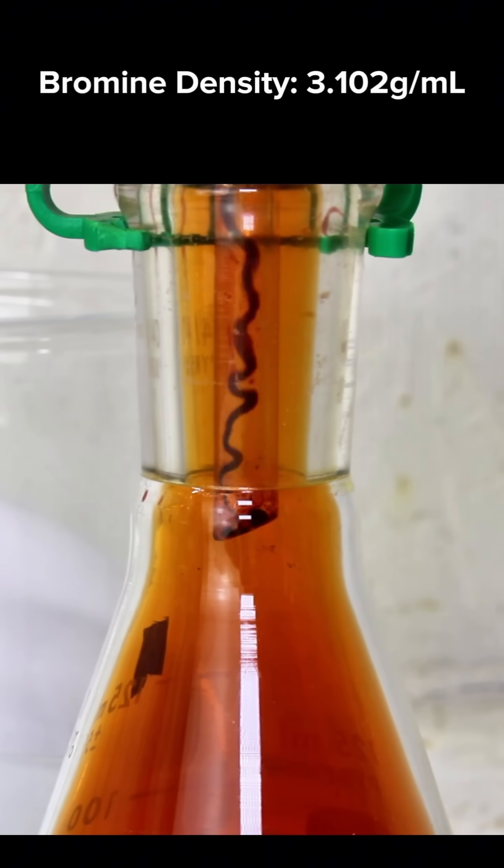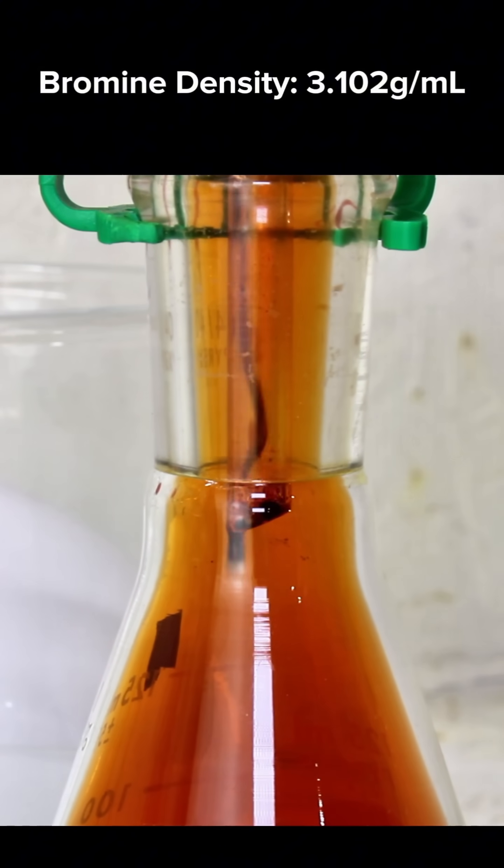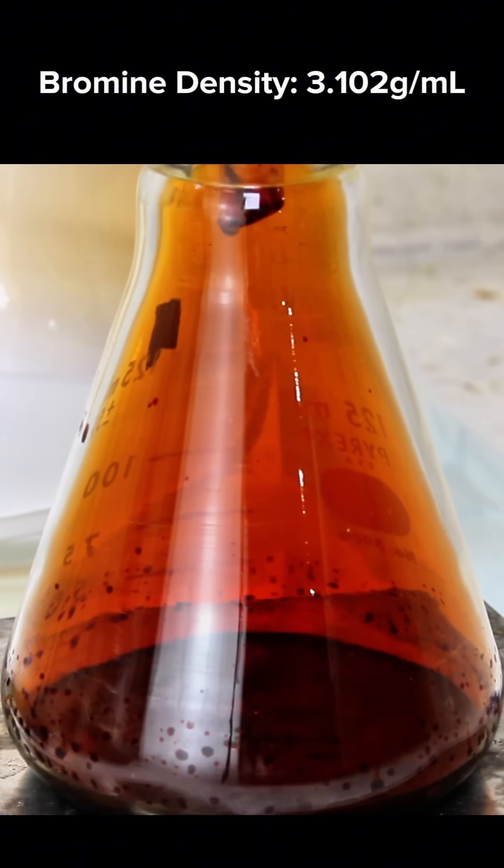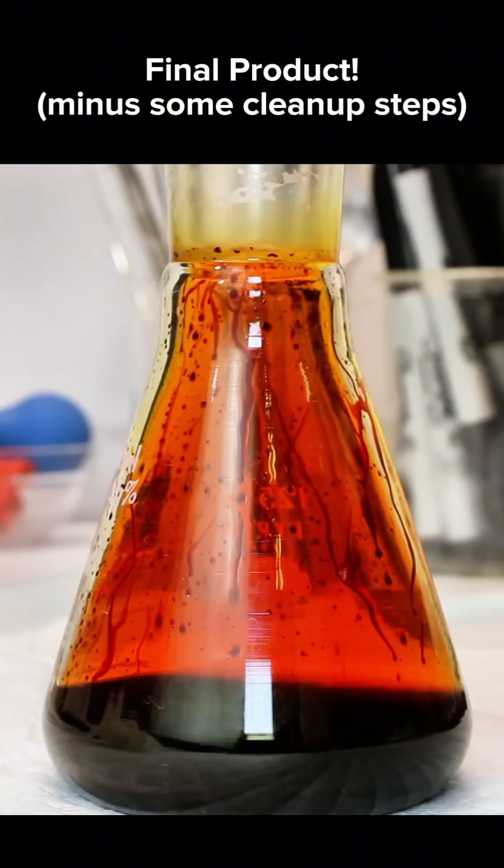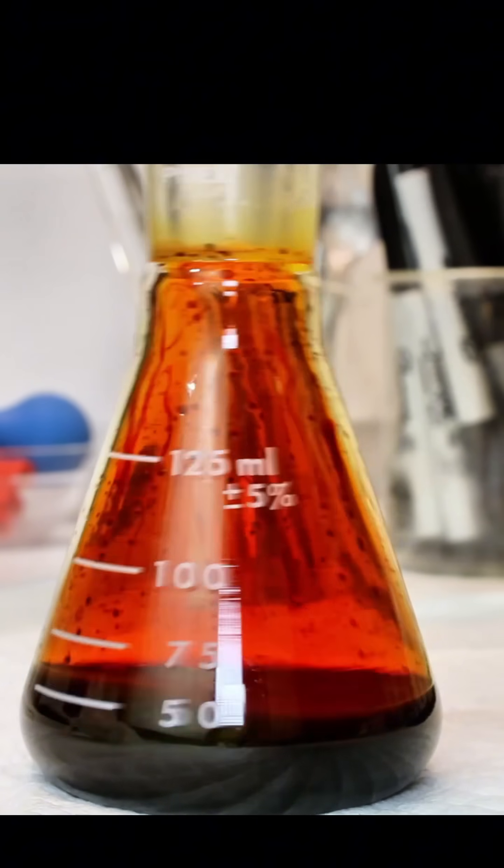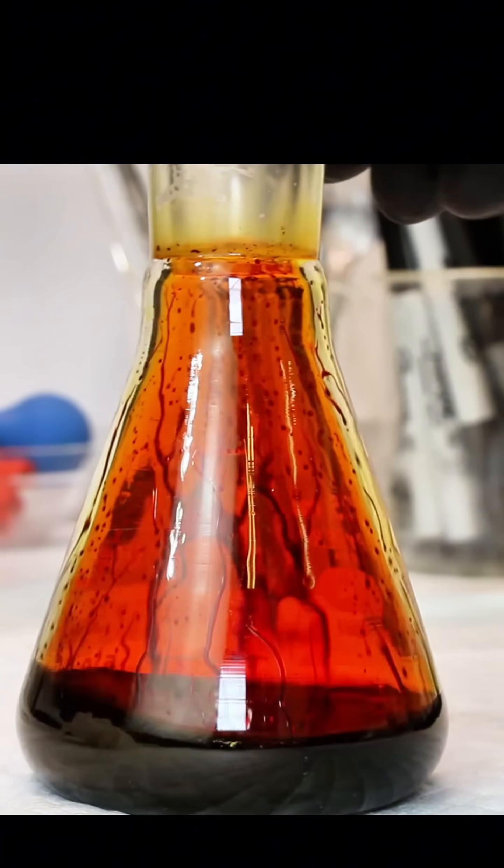Now in essence this reaction happens because oxygen is a stronger oxidizer than bromine. This means it's able to steal electrons from ionic bromide, forcing them to covalently bond to bromine. Anyway, I simply allow the bromine to continue distilling over and I'm done.